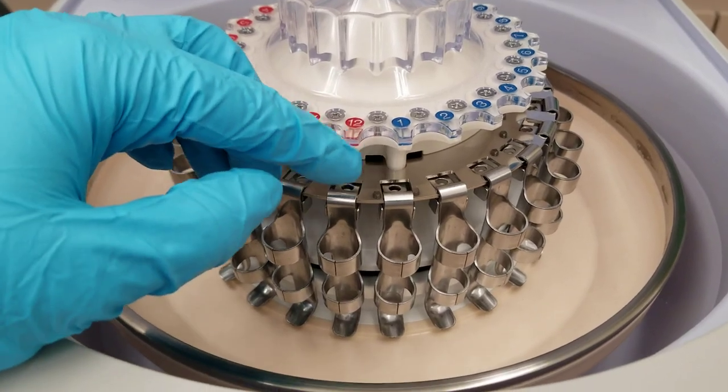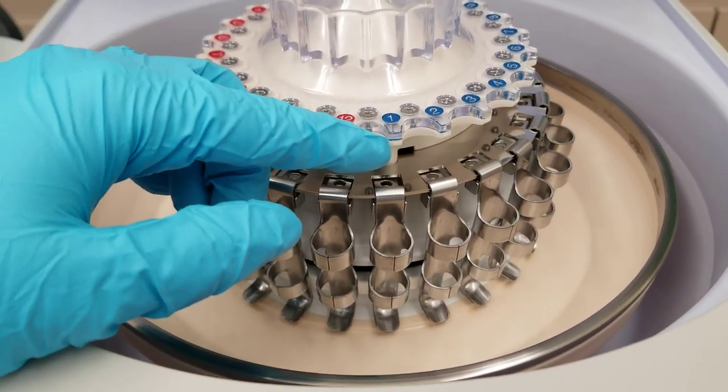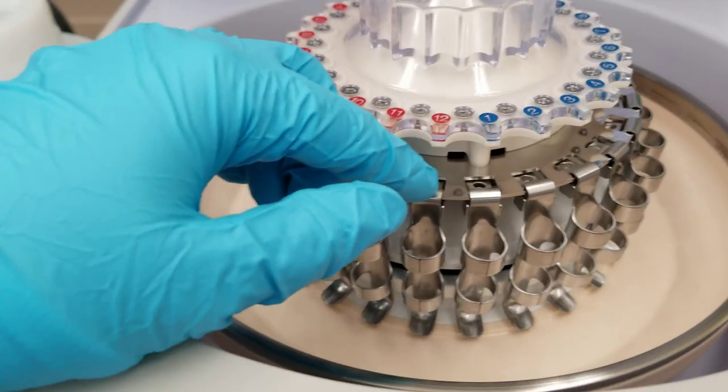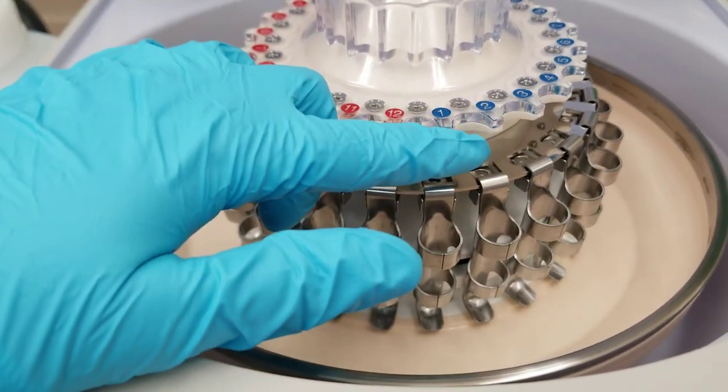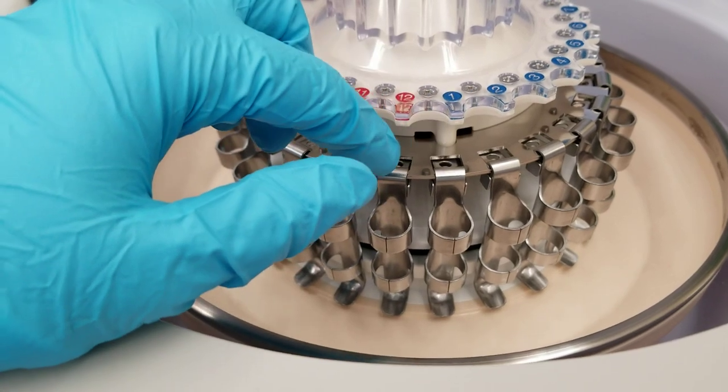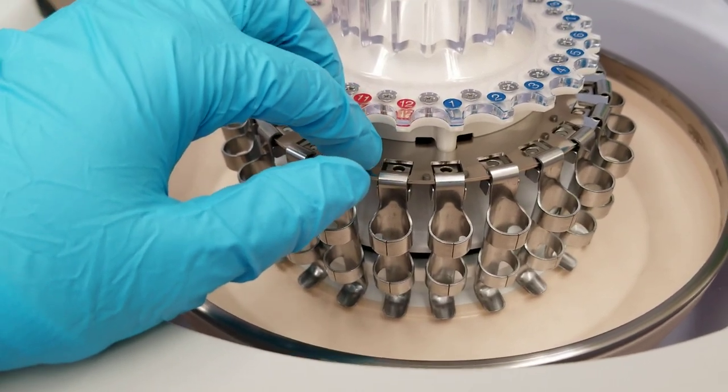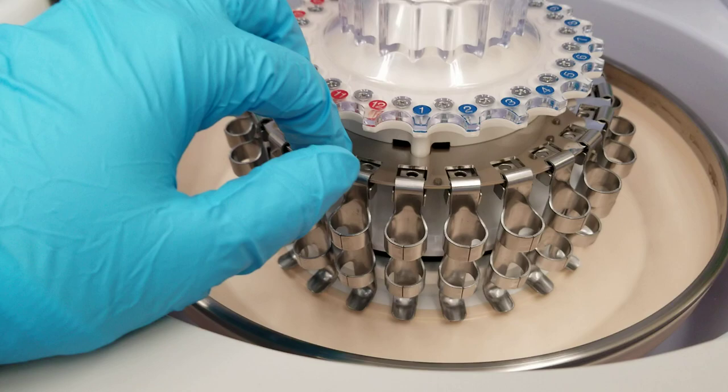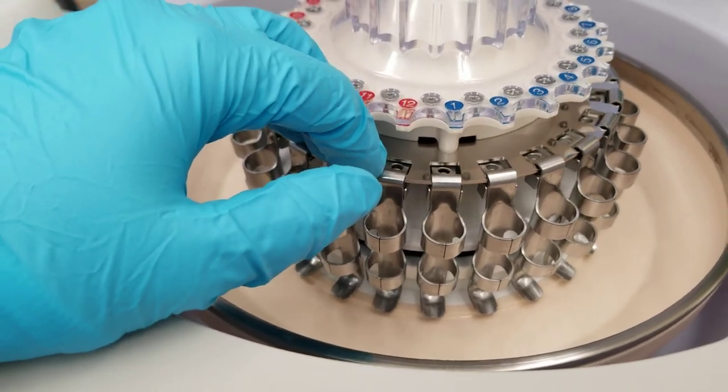So you'll notice that we've got 12 next to a one. Well, each side is color coded. So we have one side that's red, one side that's blue, and they both count all the way up to 12. And so you can color code to show whose specimen is whose or however it is that you want to do that.